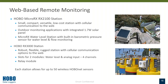We also have web-based remote monitoring stations. One in particular for water level and water quality monitoring is our MicroRX RX2100 series stations. These are small, compact, versatile, low-cost stations that communicate to our HoboLink cloud-based platform through a cellular connection. These are intended for outdoor monitoring applications and have a built-in 1.7-watt solar panel. The MicroRX water level station comes with a built-in barometric pressure sensor and a water level and flow sensor, so the station does the barometric pressure compensation for you automatically.